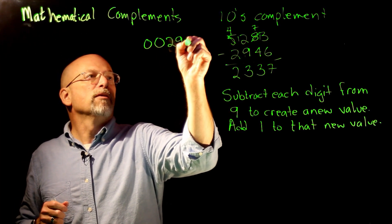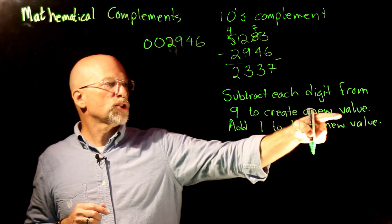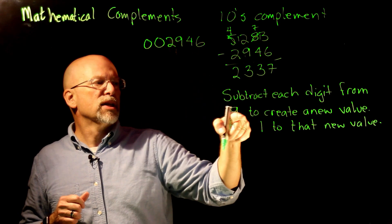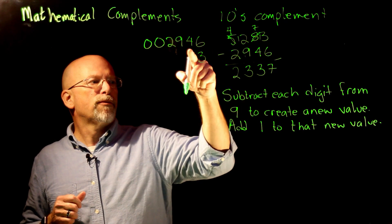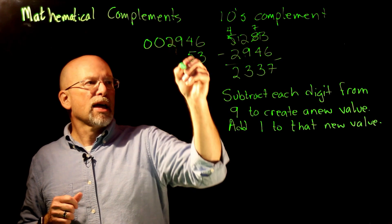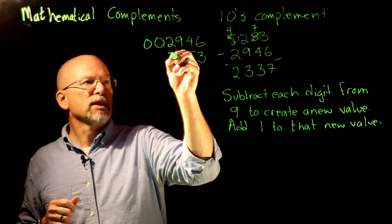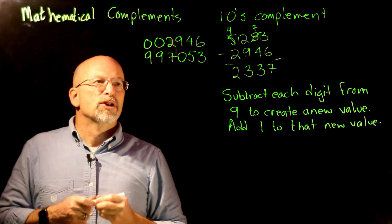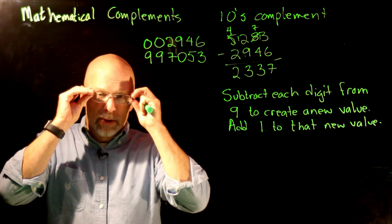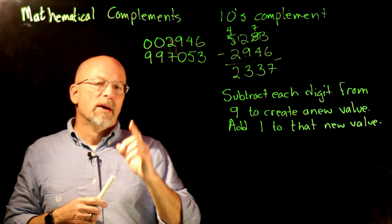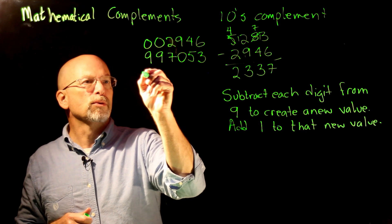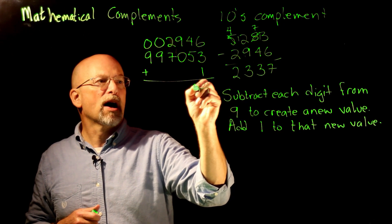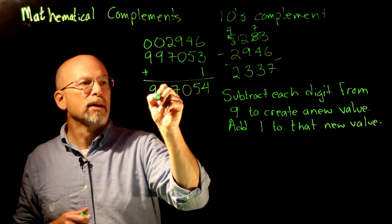Now the first step: subtract each digit from 9. 9 minus 6 is 3; 9 minus 4 is 5; 9 minus 9 is 0; 9 minus 2 is 7; 9 minus 0 is 9; 9 minus 0 is 9. So we've effectively found the complement of each digit. The last step is to add 1 to that new value, giving us 997054.